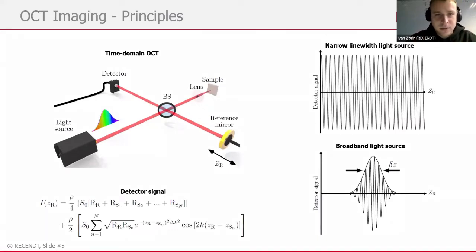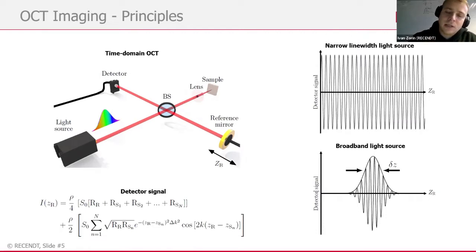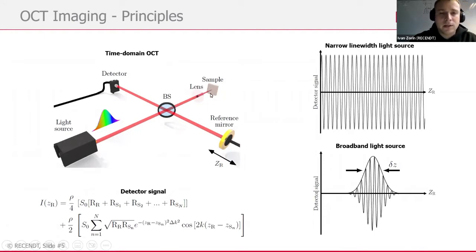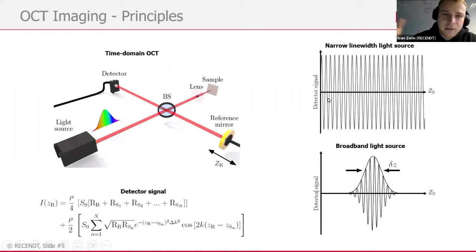This is a basic time domain OCT system. It's very good to start with time domain because it was the original historical implementation of OCT. It's based on a Michelson interferometer and exploits low coherence interferometry to get subsurface morphological information about the sample. We will see interference only in the case where the arms of the interferometer are nearly the same length — within the coherence length of the light source. If you take a quasi-monochromatic light source, we will see interference along some meters or even 100 meters. But if we take a broadband light source, the interference will be observed only within the coherence length, and this is what is exploited in OCT.